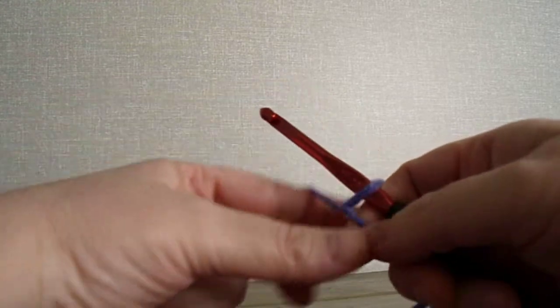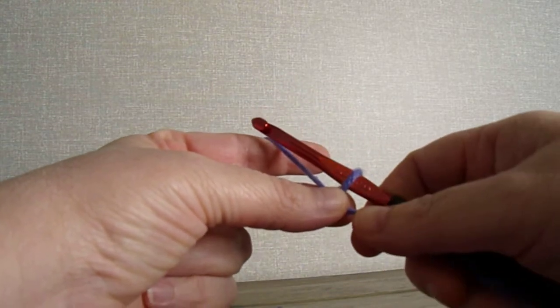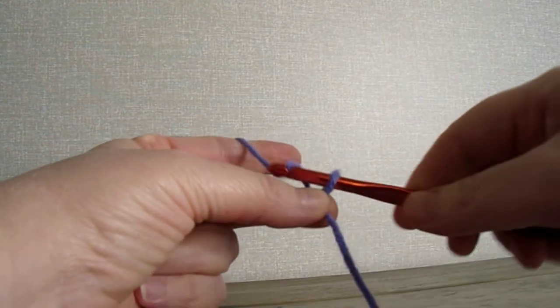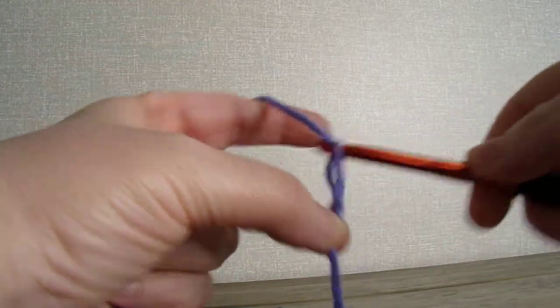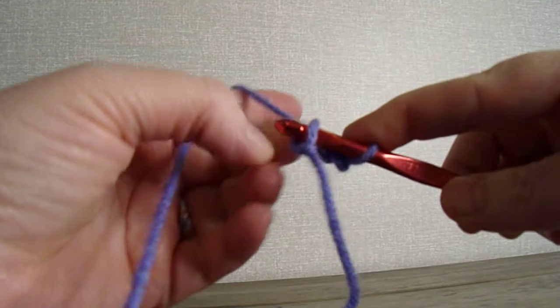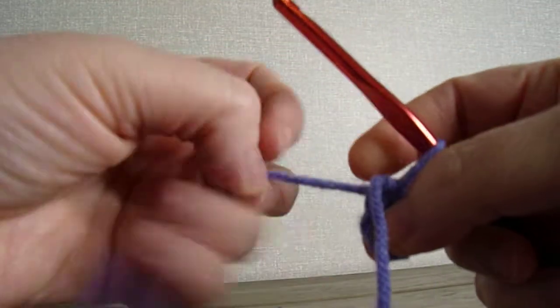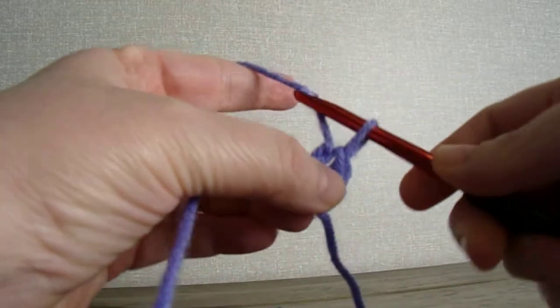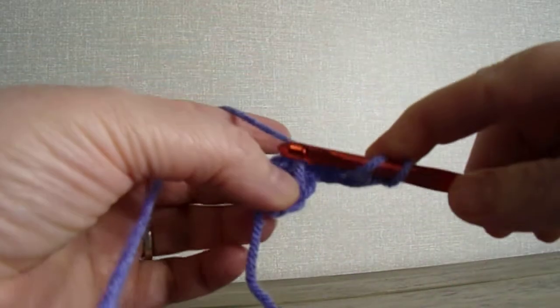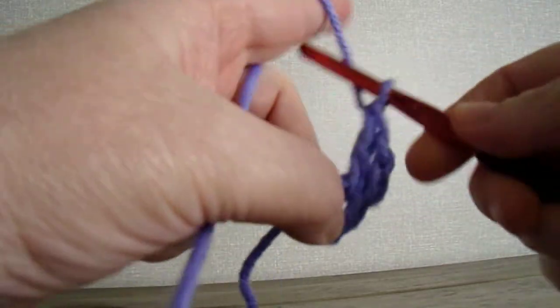In this pattern, you're going to use just a double crochet. You can make it as large as you like. You just get started with a chain 3, slip stitch to join. Now you're going to chain 2, and into that circle you're going to place two double crochets.